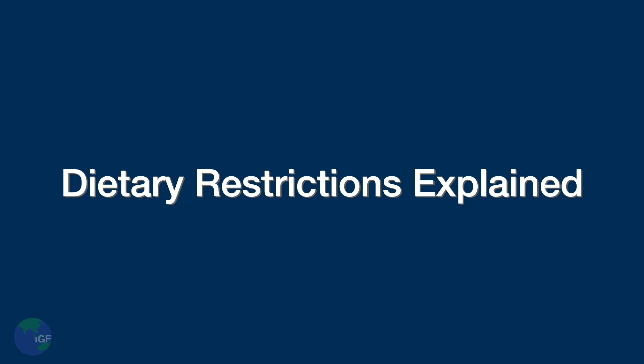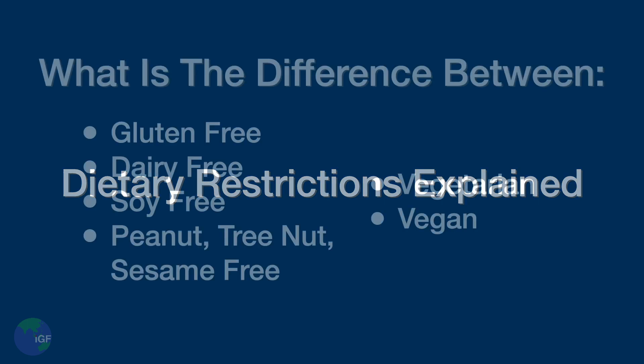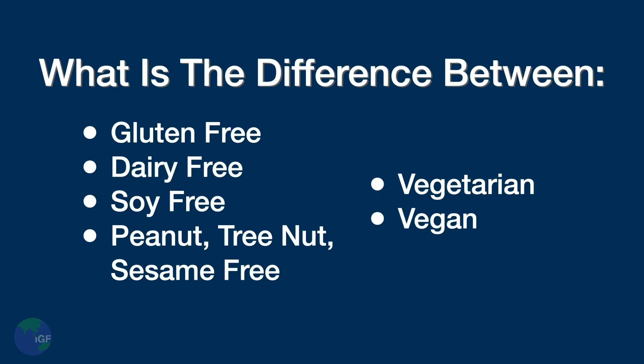Dietary restrictions can be very confusing. In this lesson we will do a general overview of six common dietary requests: gluten-free, dairy-free, soy-free, nut-free, vegetarian, and vegan. We will talk about which foods are included or excluded in each one, as well as common misconceptions.